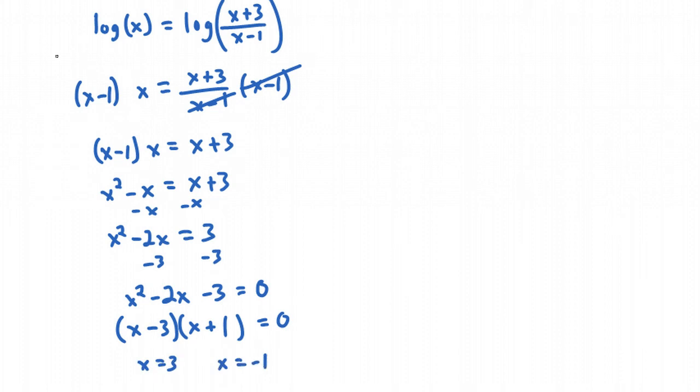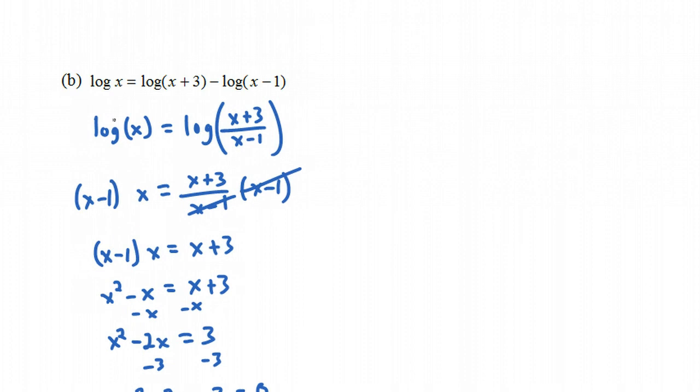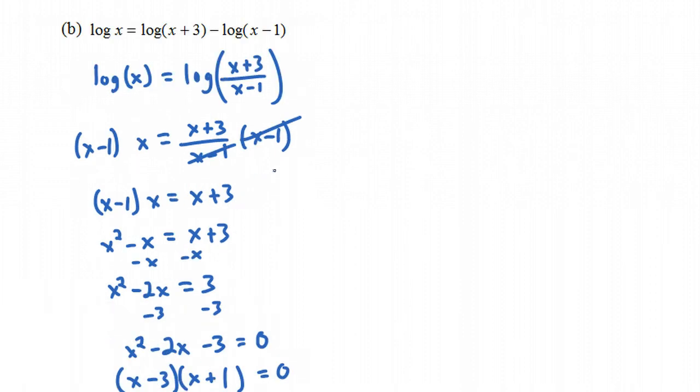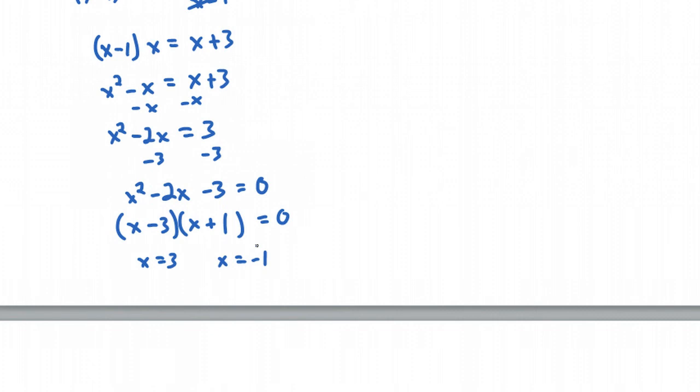You have to be a little bit careful here. If you go back to the original equation, you cannot plug in minus 1 for x, because you'd have a log of a negative number, and that is not defined. That would not make sense. So we can cancel the solution x is equal to minus 1. That's not really a solution. The only solution is x is equal to 3.